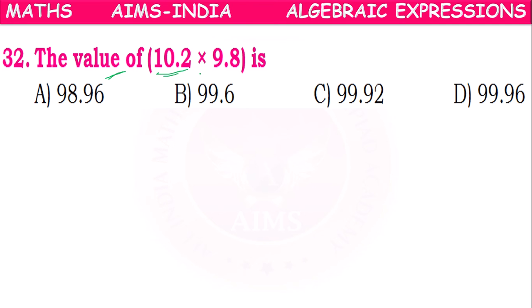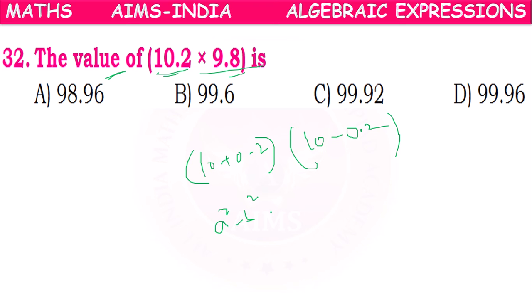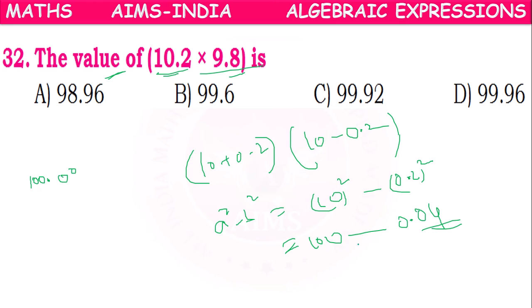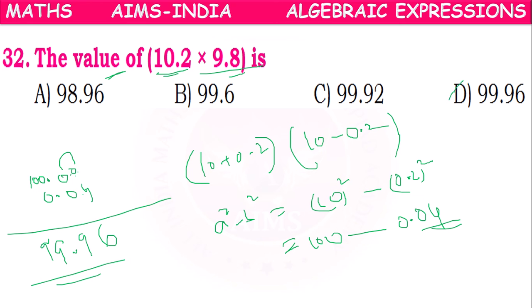Next: the value of 10.2 × 9.8. We write 10.2 as (10 + 0.2) and 9.8 as (10 - 0.2). This is in the form (a+b)(a-b) = a² - b², which means 10² - (0.2)² = 100 - 0.04 = 99.96. Option D is correct.